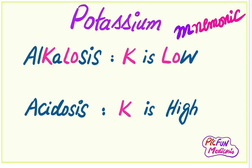The mnemonic is for potassium levels in alkalosis and acidosis. In most cases it is very difficult and confusing to remember the potassium level in alkalosis and acidosis. Potassium level is low in alkalosis.